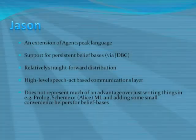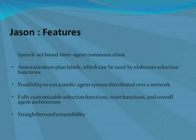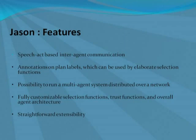Let us look at some features of JASON. It has speech-act-based interagent communications, annotations on plan labels which can be used by elaborate selection functions, the possibility to run a multi-agent system distributed over a network, fully customizable selection functions, trust functions, and overall agent architecture. It also has straightforward extensibility by means of user-defined internal actions.